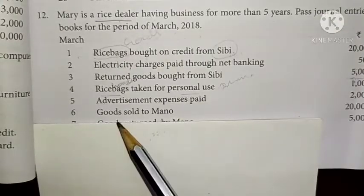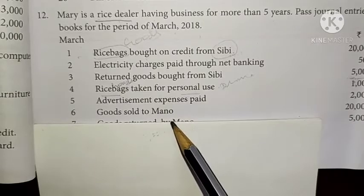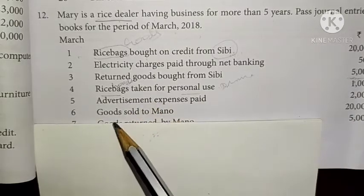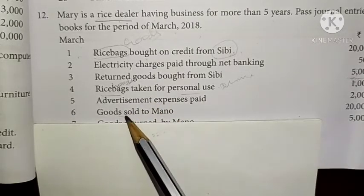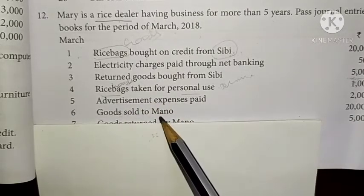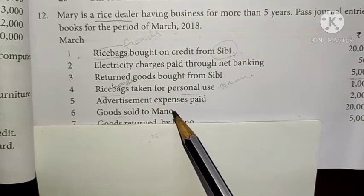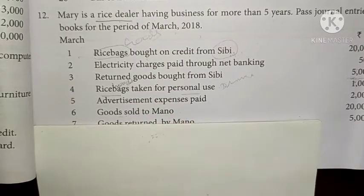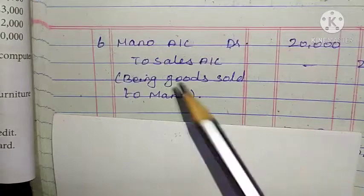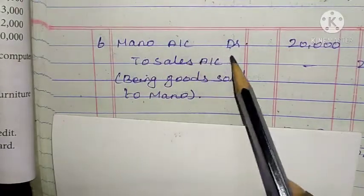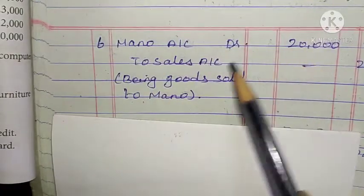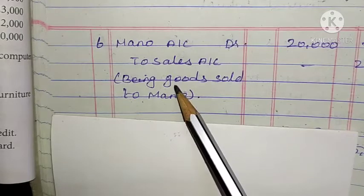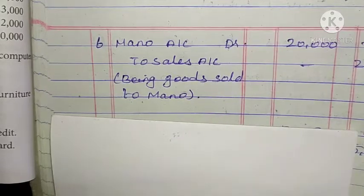Date 6: Goods sold to Mano, 20,000. Goods sold means sales. Mano is the receiver, so Mano account debited to Sales account. Mano account debited 20,000; To Sales account 20,000. Being goods sold to Mano.